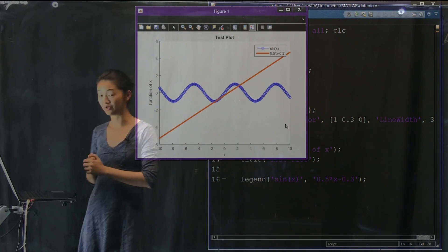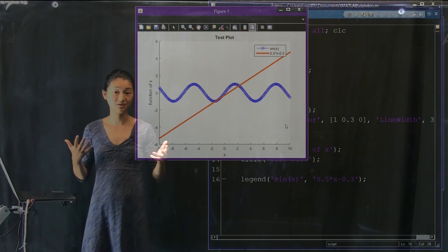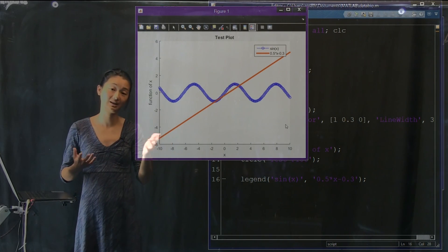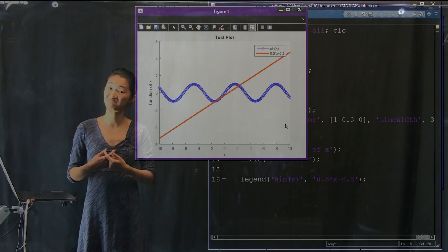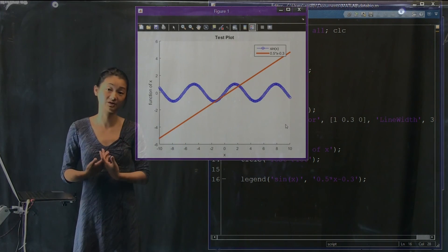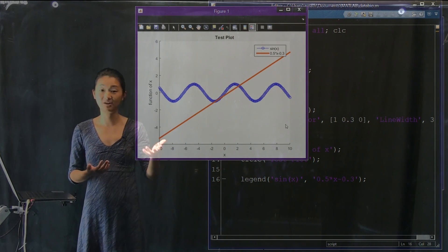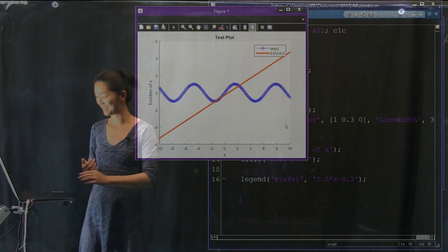So that is how you plot things on top of each other. And you can do this with more complicated data. You can do this with bigger data. You can have a hundred lines plotted on top of each other if you wanted to. The same thing generalizes.